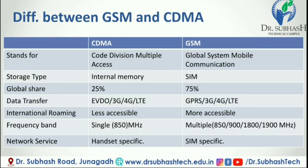Difference between GSM and CDMA: Full form — CDMA stands for Code Division Multiple Access; GSM stands for Global System for Mobile Communication. Storage type — CDMA uses internal memory; GSM uses a SIM card. Global share — CDMA holds 25%; GSM holds 75%. Data transfer rate — CDMA uses EVDO, 3G, 4G, LTE; GSM uses GPRS, 3G, 4G, LTE. International roaming — CDMA is less accessible; GSM is more accessible. Frequency band — CDMA uses a single band of 850 MHz; GSM uses more than one band: 850, 900, 1800, and 1900 MHz. Network service — CDMA is handset specific; GSM is SIM specific.